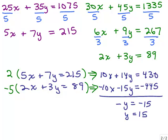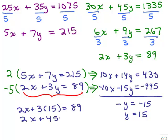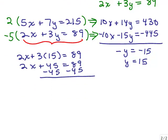Since I know Y, I can go back up to one of these equations and figure out what X is. I'm going to put in 15 for Y, so that will give me 2X plus 3 times 15 equals 89, so 2X plus 45 is 89. Subtract 45, so we have 2X equals 44, and X is 22.